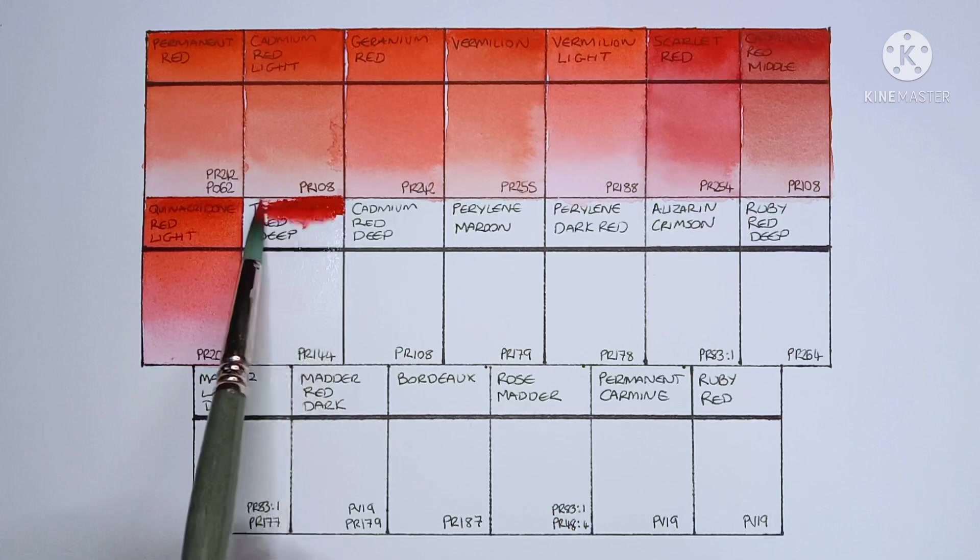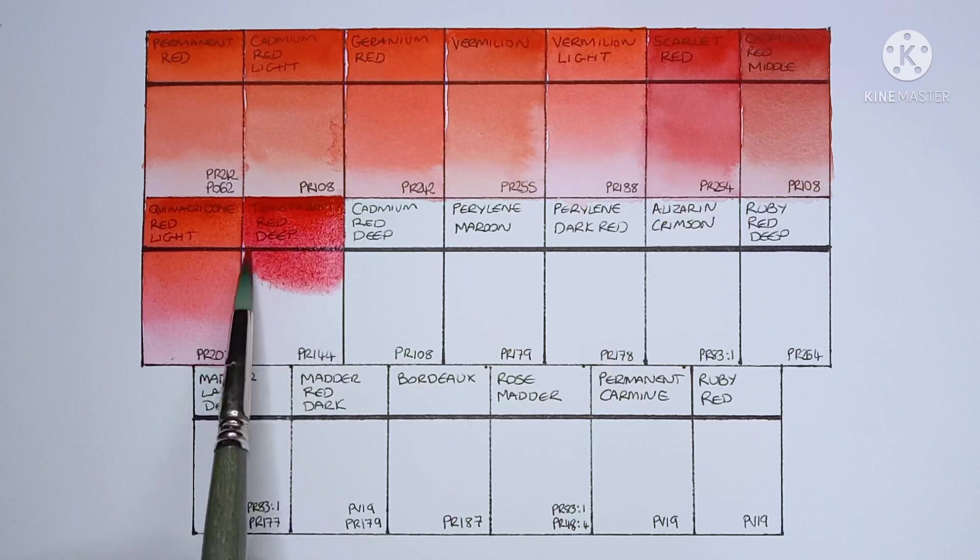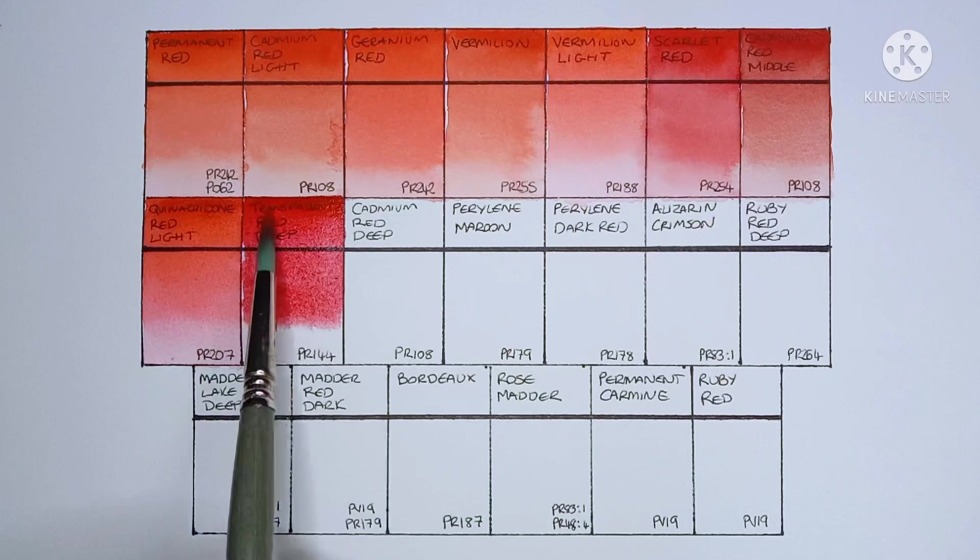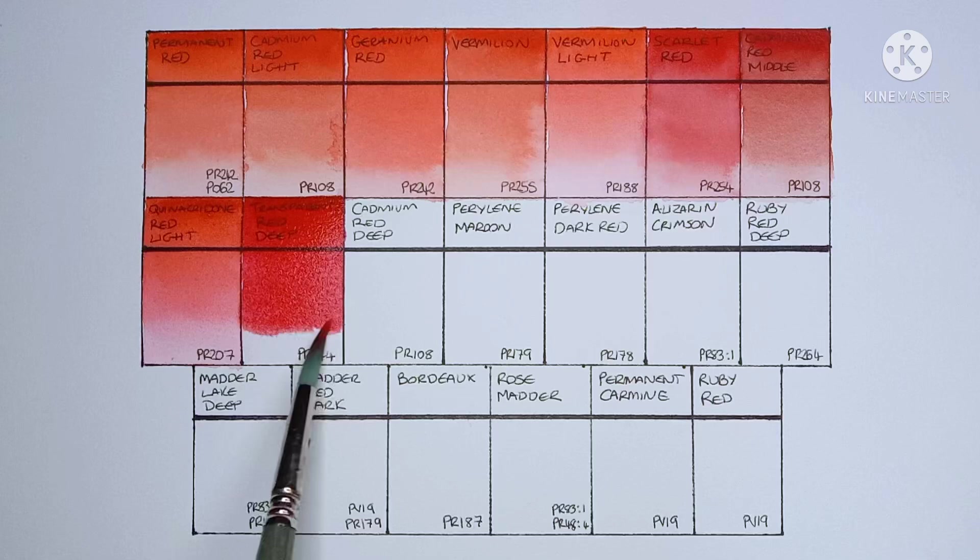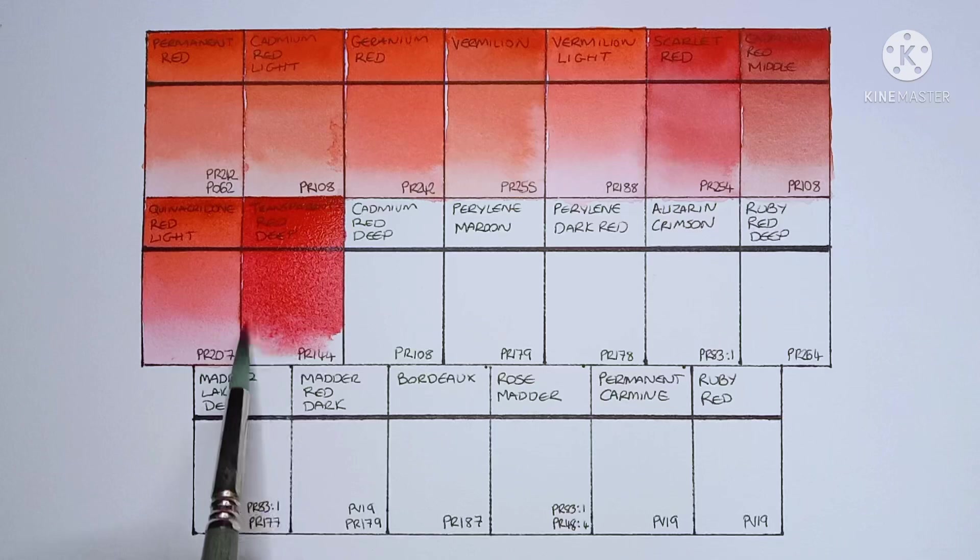Next up is transparent red deep, and it's made from PR144. So this is another new pigment for me. Yeah, it looks really good. It's quite nicely saturated. I think I prefer it to the quinacridone red before it.